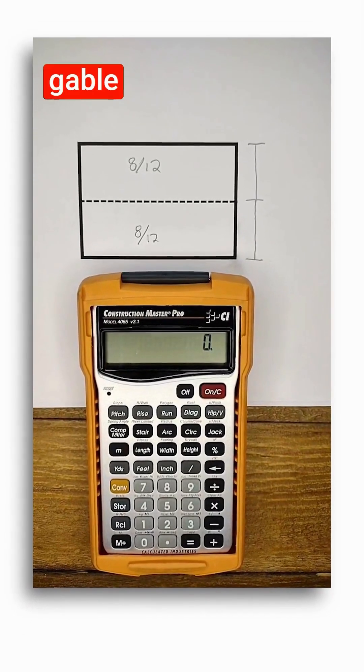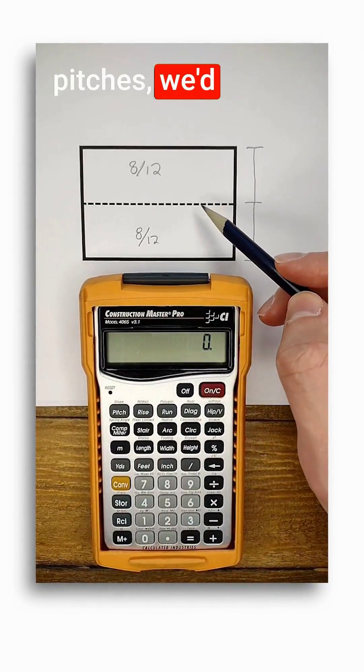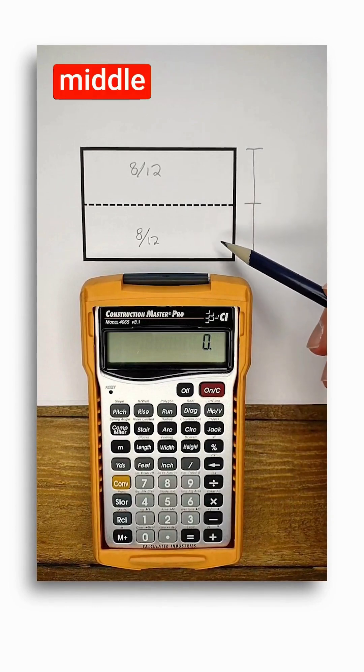Here's how you can do this using the Construction Master Pro. Normally for a simple gable roof with equal pitches we'd set our ridge right down the middle of our span.